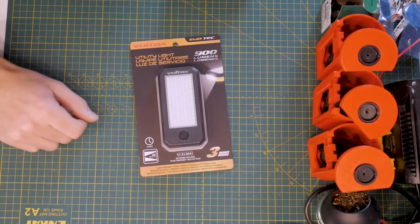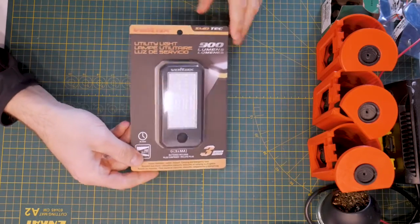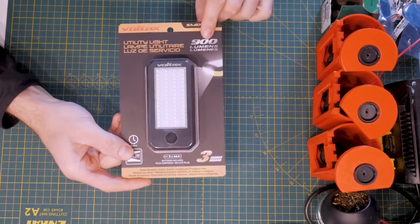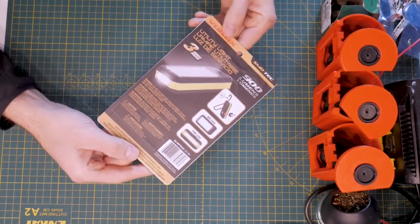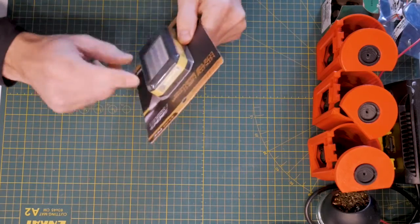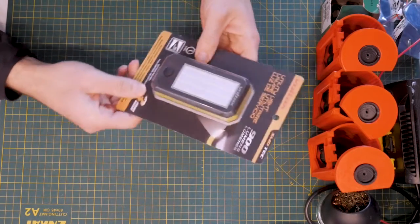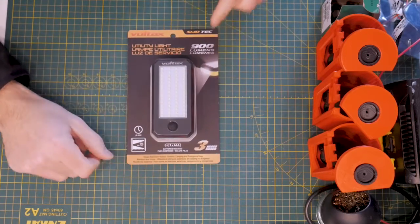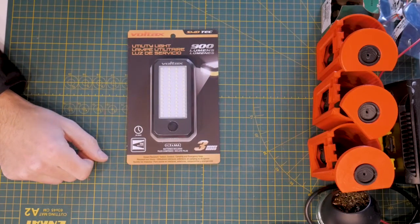Before assembling one of the tube bodies we need to disassemble one of these dollar store LED lights. They can be found at most dollar stores; this one cost me four dollars Canadian and claims to be 900 lumens. I got three of them to complete three LED tube bodies because the LED panels and the button are going to be reused in each of the LED tube bodies.